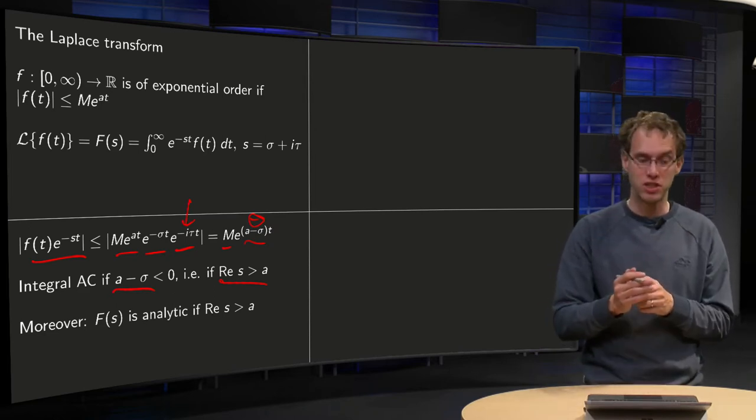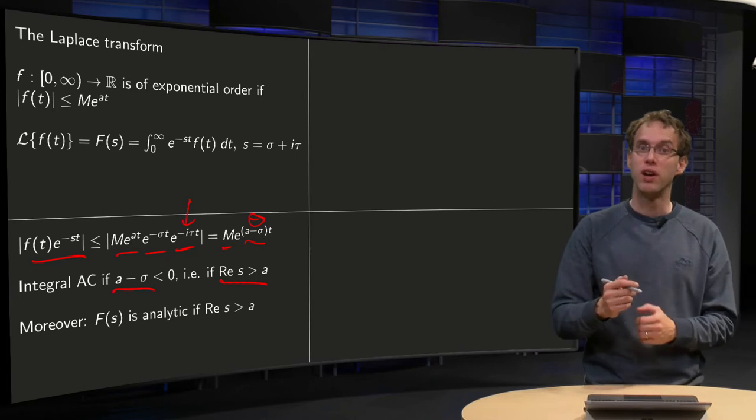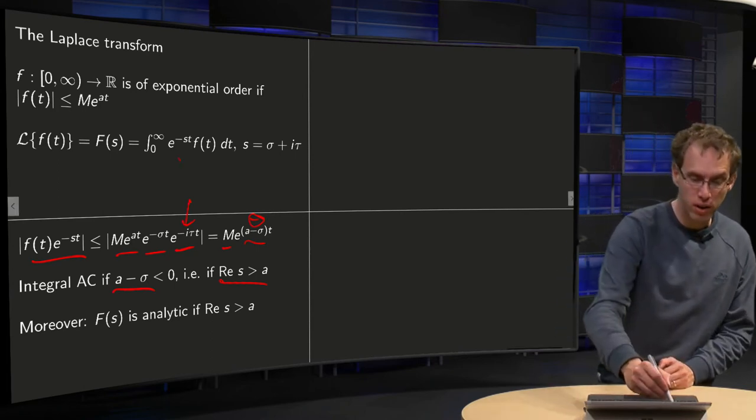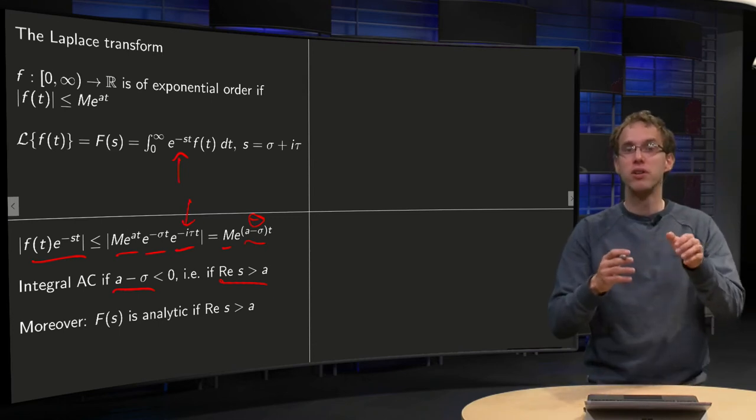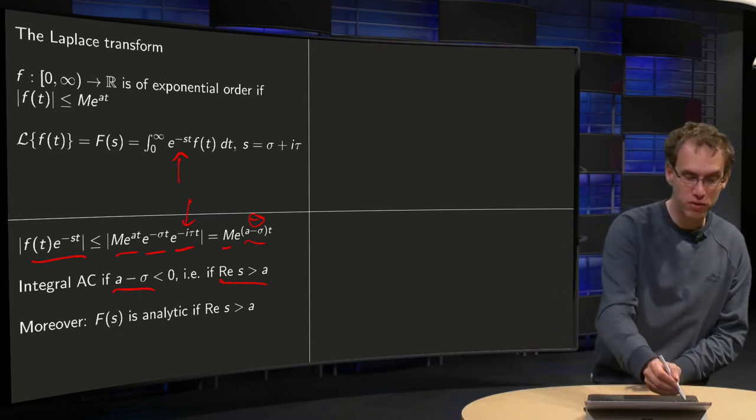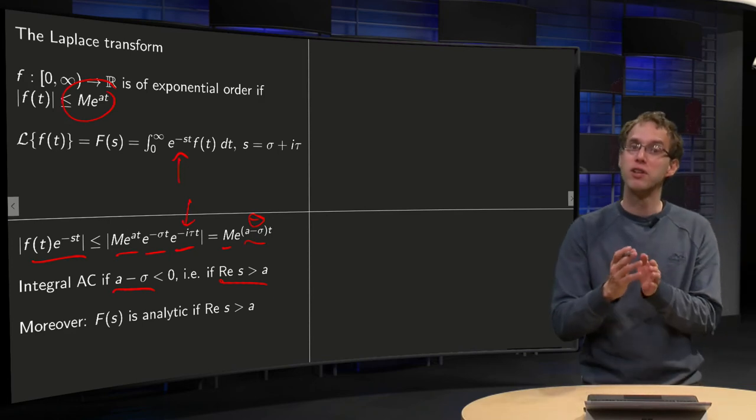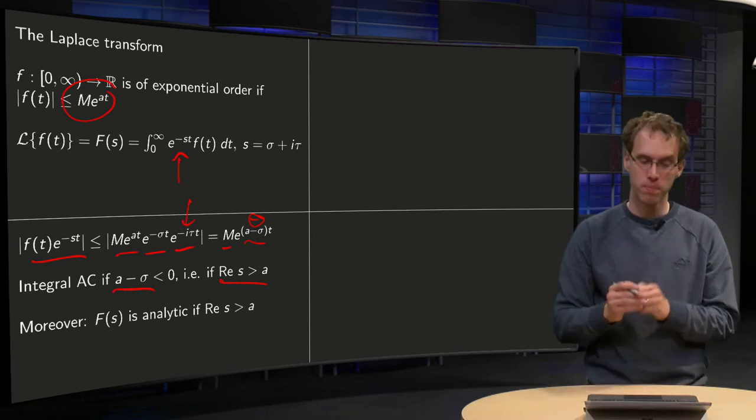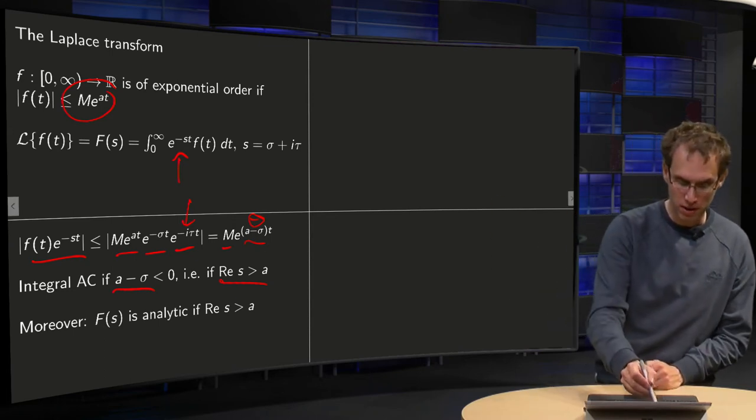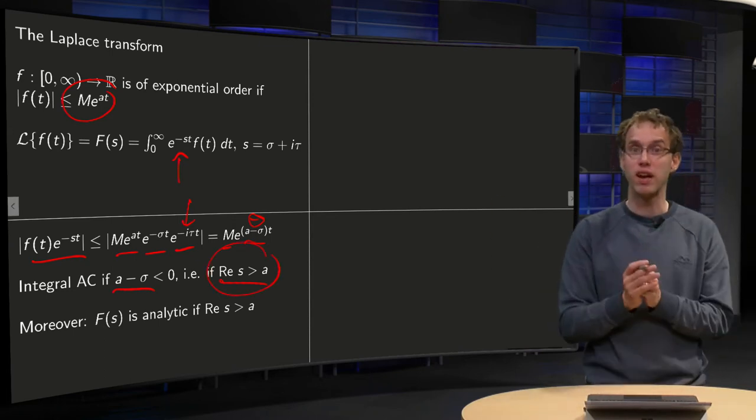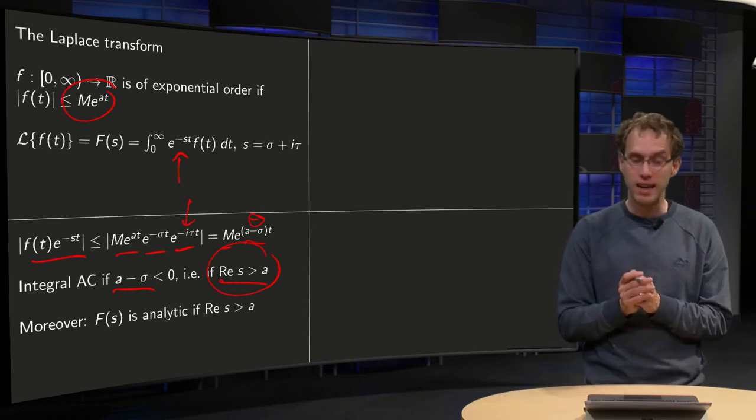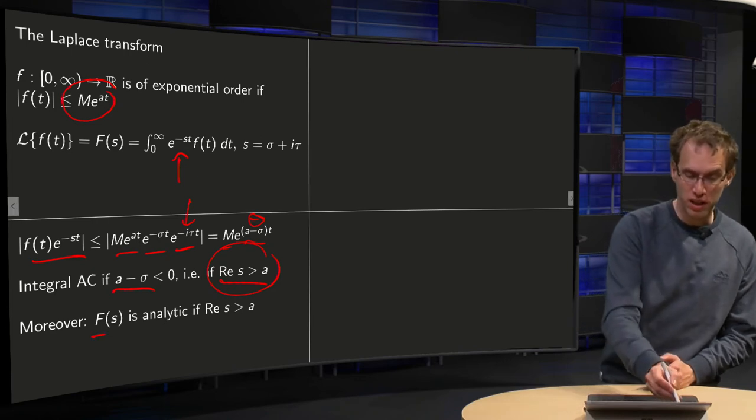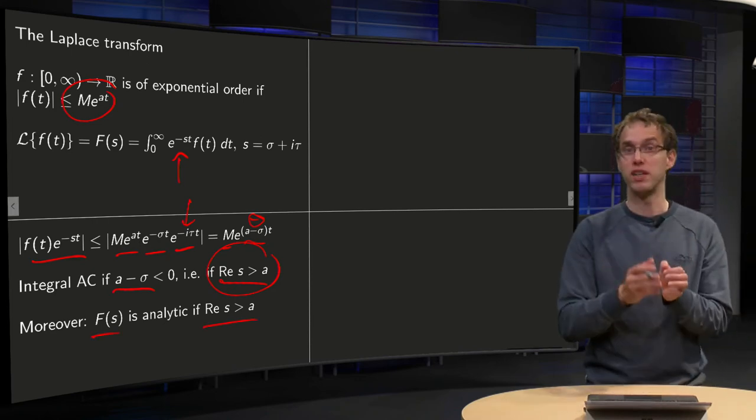Then this integral exists. So you can compute your Laplace transform provided your e^(-st) is strong enough to cancel out this divergence which arises from your function f. So only if your real part of s, your σ, is big enough, and that's what's expressed by this condition that the real part of s has to be bigger than your a. Moreover, you can prove that your function F is even analytic if the real part of s is bigger than a.